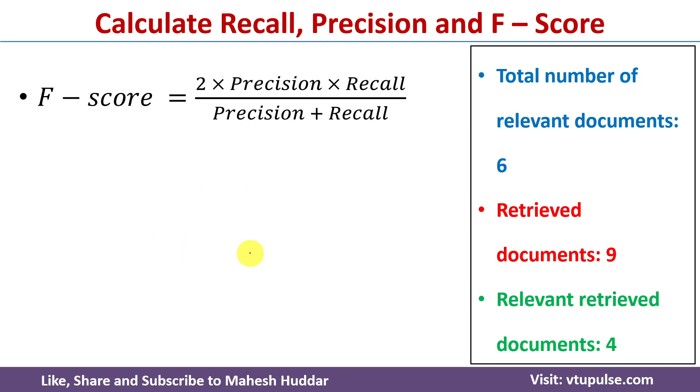And now we will calculate F-score, so F-score equals 2 multiplied with precision multiplied with recall divided by precision plus recall. We already know the precision and recall values in the previous slide, so put those values in this formula. We will get F-score equals 0.5328.